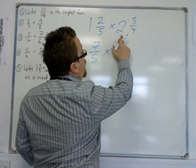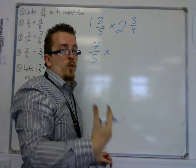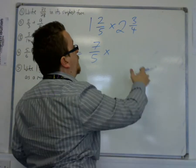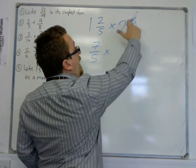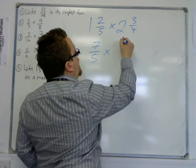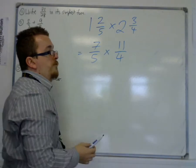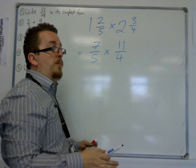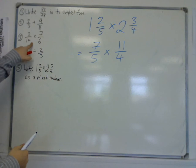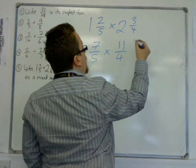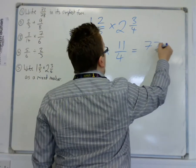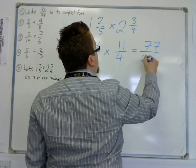2 and 3 quarters. Well, 2 is 8 quarters. 8 divided by 4. So 2 is 8 quarters. Add on another 3 quarters makes 11 quarters. So we now have 2 improper fractions, which we then multiply the way that I showed in question 3. So we have 7 times 11 is 77, and 5 times 4 is 20.